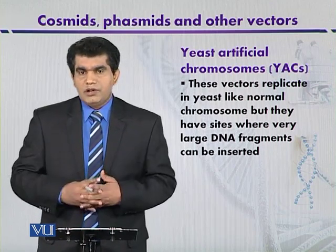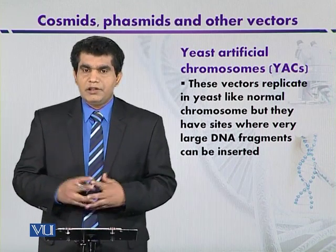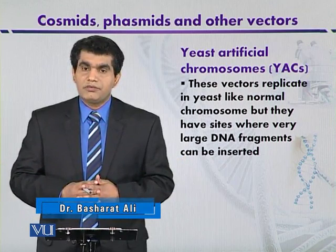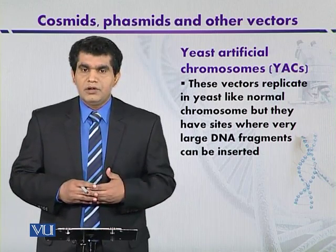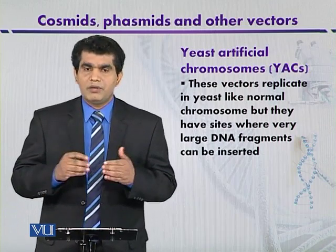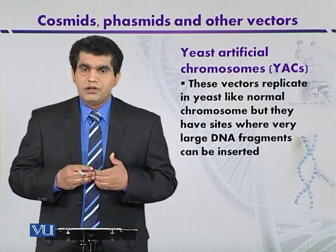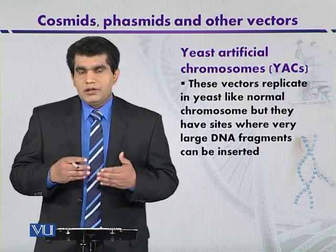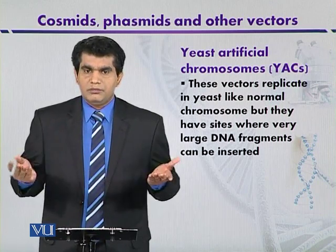If we look at the map of a yeast artificial chromosome, we find that it contains different selectable markers that can be used for the selection of recombinants. It also contains a portion called the centromere — where the microtubules or spindle fibers attach — which plays a role in chromosome division during the mitotic process. Another important portion is its origin of replication.